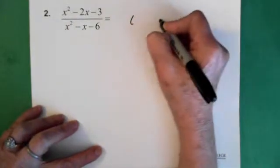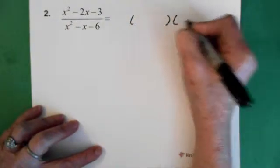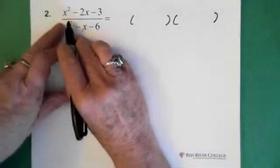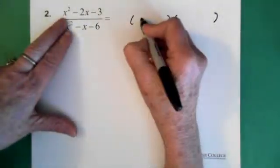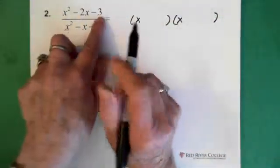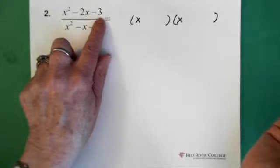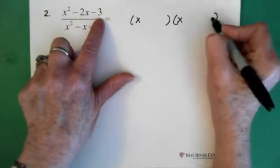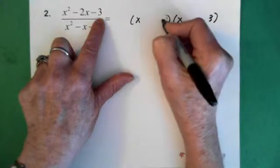So for the top, I just start with my two brackets. On the top, I can see that to get my x², I have to have an x and an x here. Then I think, what do I have to do to get the -3? Well, the only option really is 3 and 1. So I'm just going to put a 3 here and a 1 here.